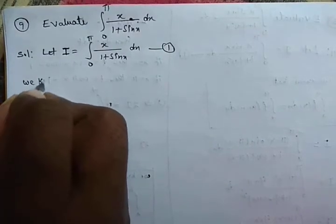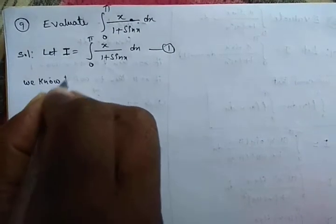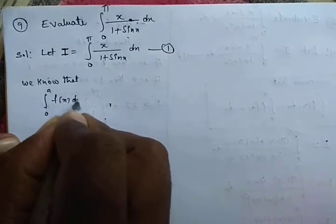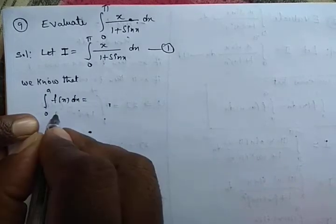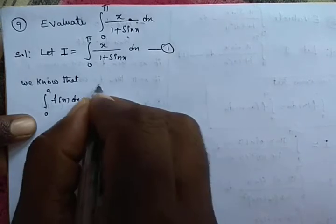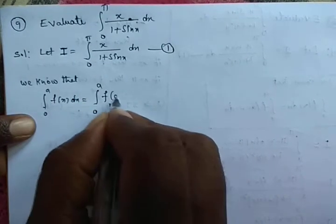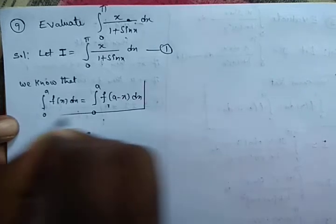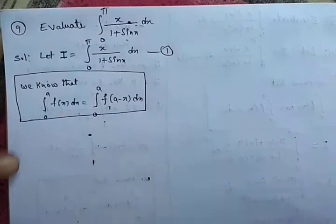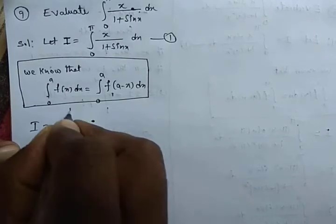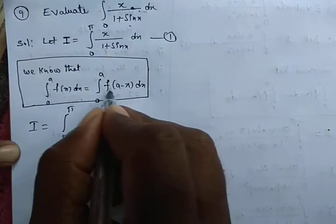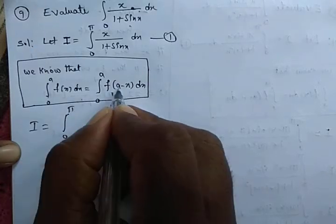We know that the integration from 0 to a of f(x) dx equals the integral from 0 to a of f(a minus x) dx. This property holds when the lower limit is 0. Here a equals the upper limit π, so we replace x with π minus x.